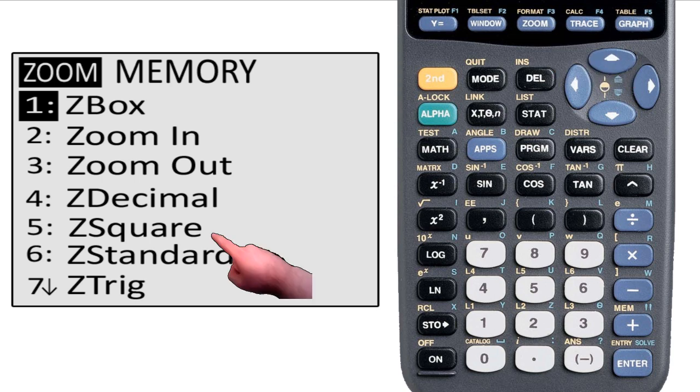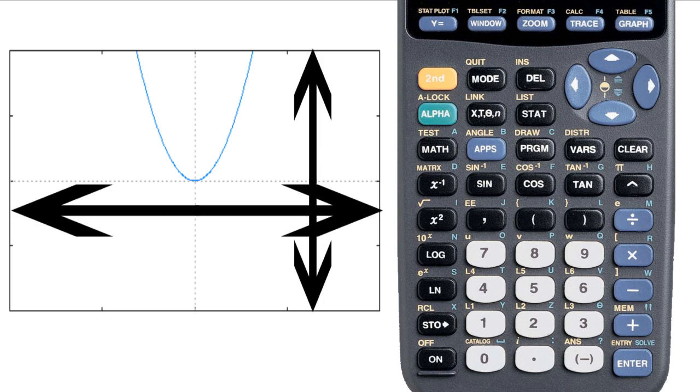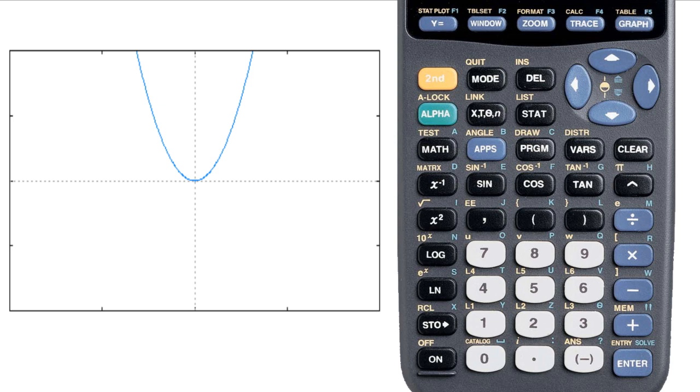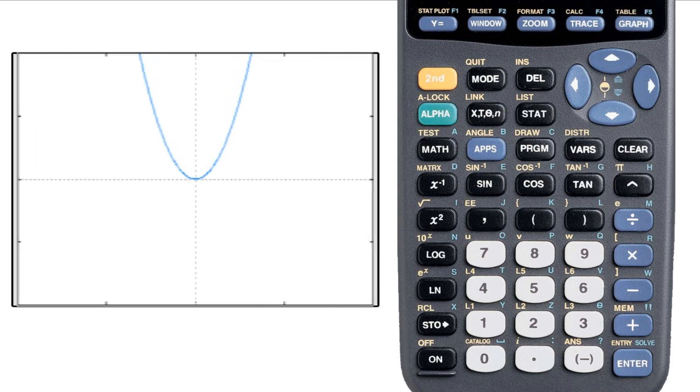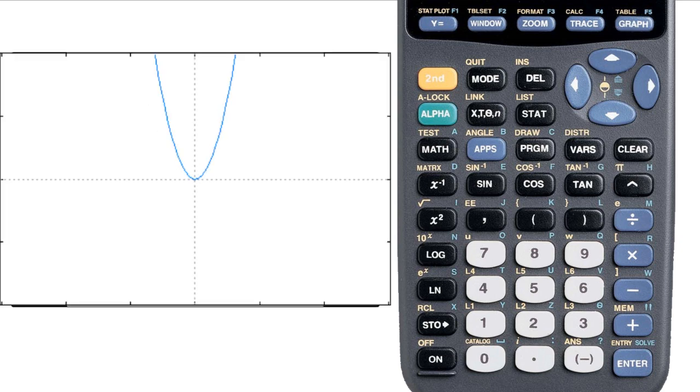Now let's take a look at Z-square. Z-standard shows you the values from negative 10 to 10 on the x-axis and negative 10 to 10 on the y-axis. But there's a problem with that. The screen is wider than it is tall. That means that the graph is going to be stretched horizontally. That's where Z-square comes in. Basically, Z-square accounts for the width of the screen and changes the x-values to adjust. It makes these adjustments no matter where you're zoomed into, too.